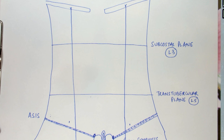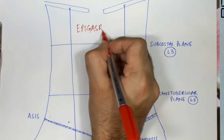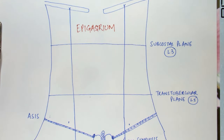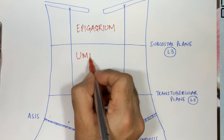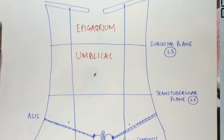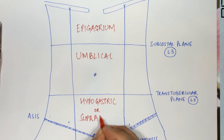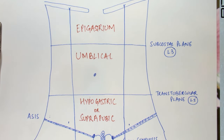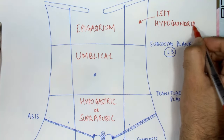First we will talk about the three regions in the middle of the abdomen. The first is the epigastric region or epigastrium — since this region lies just above the stomach, it is known as the epigastrium. The area just below is the umbilical region, corresponding to the umbilicus. Below the umbilical region is the hypogastric or suprapubic region, which lies just above the pubic bones and below the stomach.